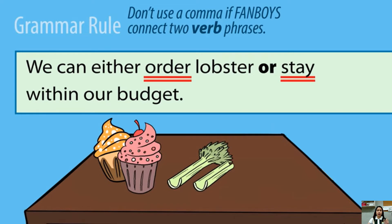Another grammar rule: do not use a comma if FANBOYS connect two verb phrases. Example: 'We can either order lobster or stay within our budget.' As you see, the underlined verbs are 'order' and 'stay.' You connect the two by adding the coordinating conjunction 'or,' and again, you do not need to add a comma.